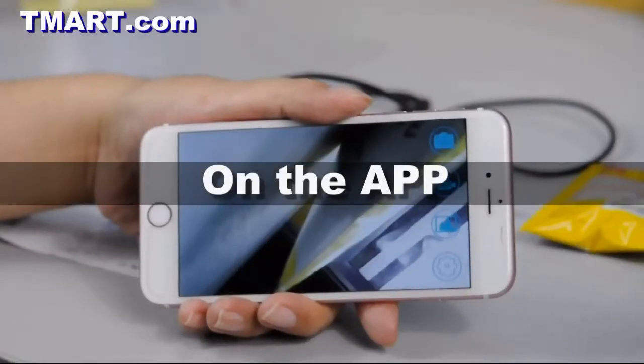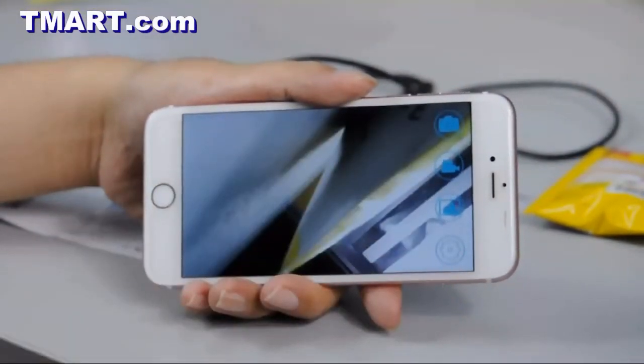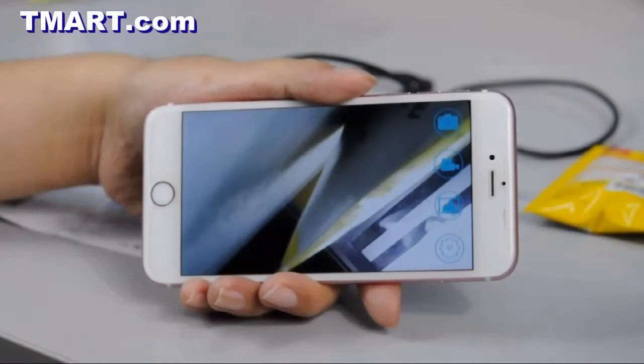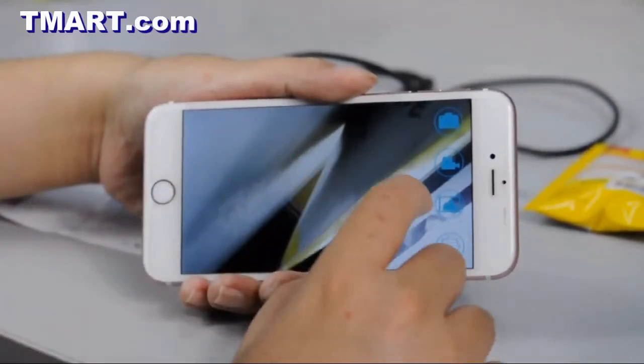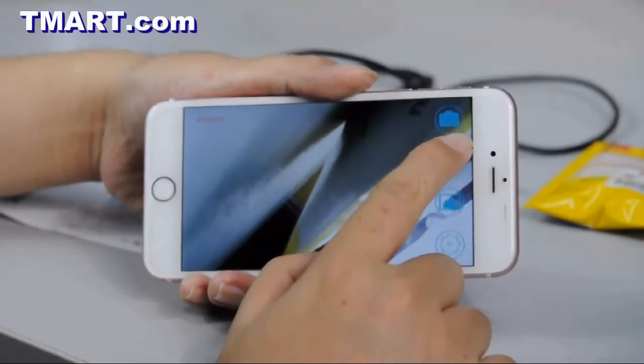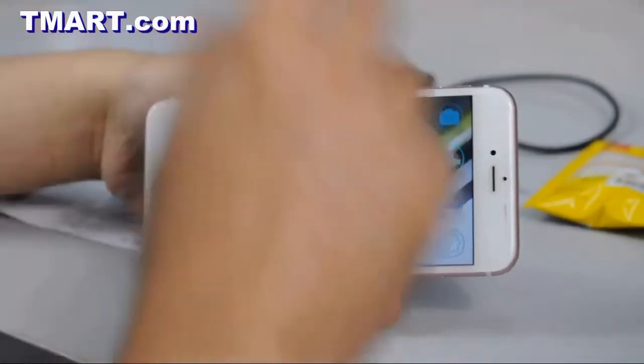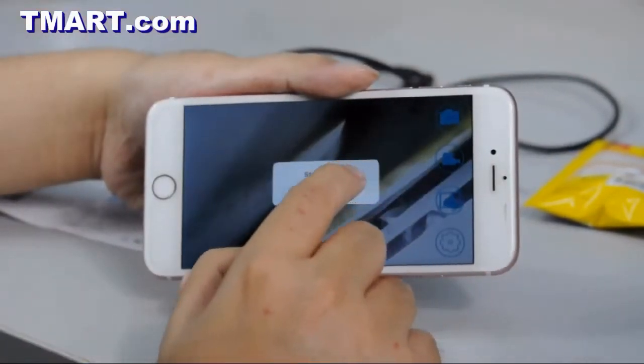On the app, if you press the camera button here, you can take a picture. Over here, this is the video icon. So you press that, then you start recording the video. Press it again to stop recording.